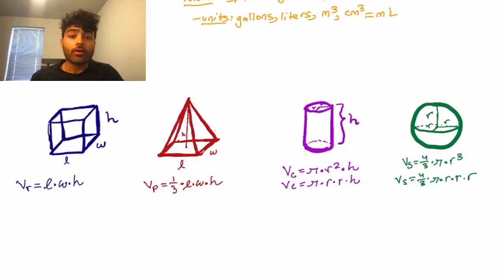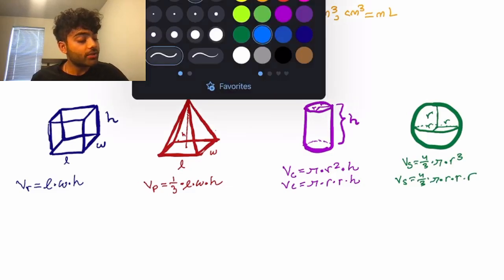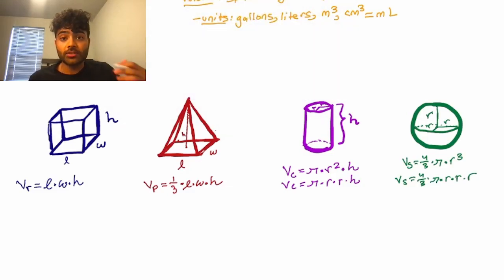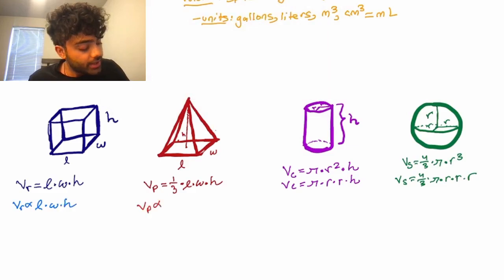So we have our four volume expressions, and now let's turn them into proportionality. When we do this, we replace the equal sign with a proportional to sign, and we take out any constants. So for our rectangular prism, v sub r is proportional to l times w times h. For our pyramid, v sub p is proportional to l times w times h as well, because the one-third is a constant.